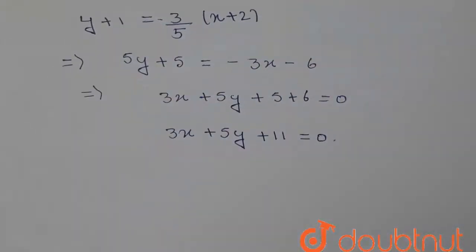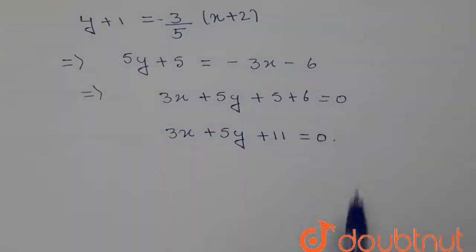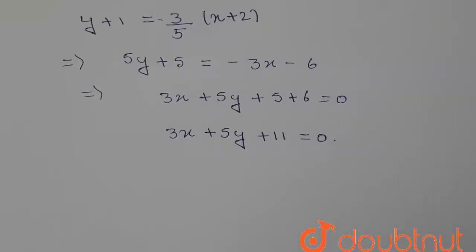So this is the equation of the line passing through (-2, -1) and parallel to 6x - py + 7 = 0. This is the required answer. Thank you.